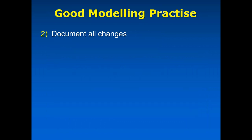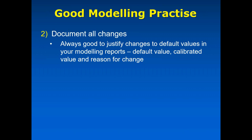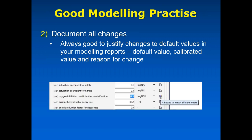Another highly recommended practice is to document all the changes you make to your parameters. You would normally include this in your modeling reports anyway — justify the changes made to default values, recording what the default value was, what your new calibrated value is, and the reason for the change. For example, 'we adjusted the growth rate to match our effluent ammonia.' GPSX has a notes field next to every parameter. If you click it, you can enter details. When a note has been entered, a small icon appears and you can hover your cursor over it to find that information.